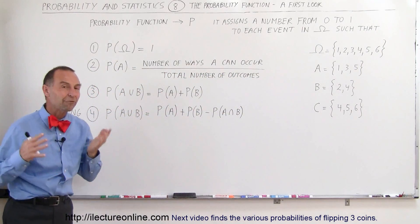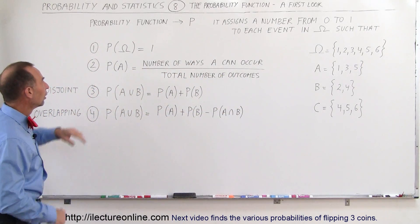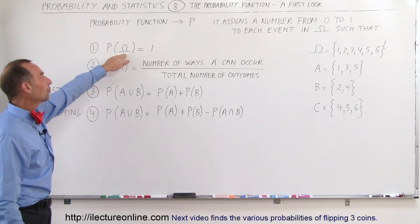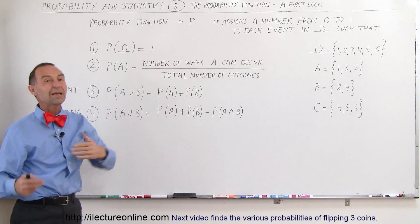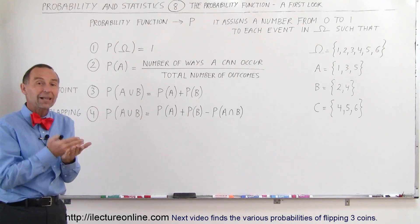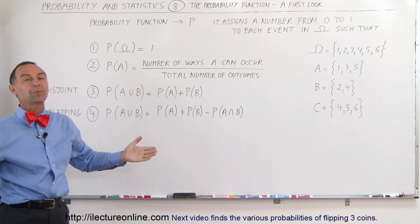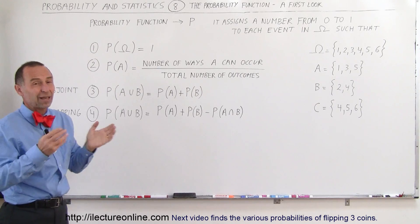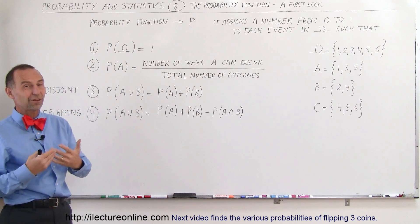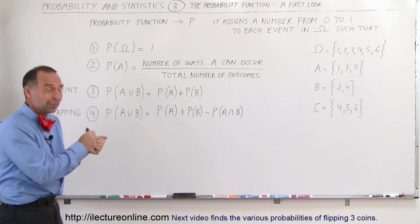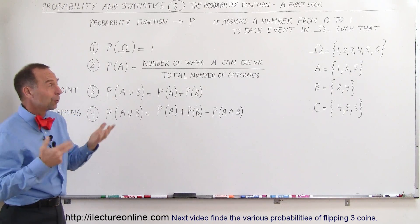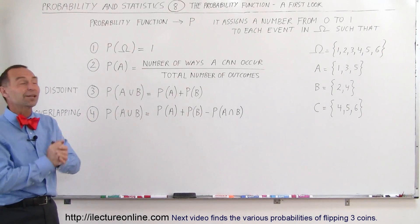Now we're going to cover four rules. First, the probability that the events in the sample space occur is equal to 1. That means there's a 100% probability that the outcome will be some element of the sample space. This makes sense because the sample space represents all the possible outcomes, so there's a 100% probability that one of those outcomes will occur.